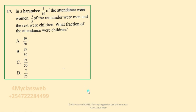Hello viewers, once again I want to thank all those people who have subscribed to this channel. This was question number 17 that was being tested in the KCPE for the year 2017, requested by one of the viewers. The question reads: in a harambee meeting, three tenths of the attendance were women, three fifths of the remainder were men, and the rest were children.